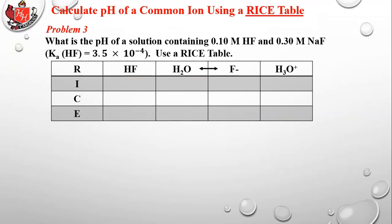New problem: calculate the pH of a common ion using a RICE table. What is the pH of a solution containing 0.1 M hydrofluoric acid and 0.3 M sodium fluoride, given Ka = 3.5 × 10⁻⁴? First, sodium fluoride dissolves completely — the sodium is a spectator ion, leaving the fluoride ion F⁻, which is the common ion of hydrofluoric acid.